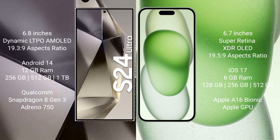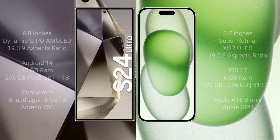The Samsung Galaxy S24 Ultra comes with 12GB RAM and 256GB, 512GB, or 1TB internal storage, with a Qualcomm Snapdragon 8 Gen 3 processor and Adreno 750 GPU. The iPhone 15 Plus comes with 6GB RAM and 128GB, 256GB, or 512GB internal storage, with an Apple A16 Bionic processor and Apple GPU.